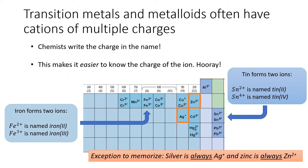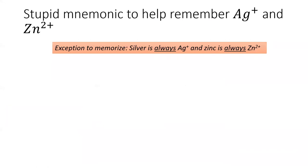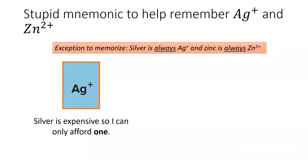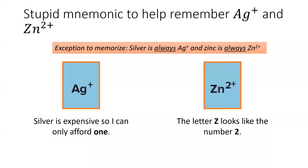As always, there are exceptions. Silver only forms a 1+ ion, and zinc only forms a 2+ ion. The charge of these is not written in the name, so you will need to know it. With stupid exceptions come stupid mnemonics: silver is expensive, so I can only afford one. The Z in zinc looks like the number two.